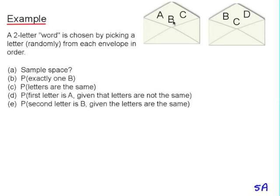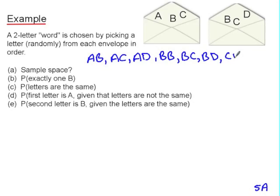In this example, we have two envelopes, each containing three letters. And we make a two letter word by picking a letter randomly from each envelope. So I could take the B and the B, or the A and the B, etc. So my sample space could just be written as a list. AB, AC, AD, BB, BC, BD, CB, CC, CD. And you'll notice I've written this list in a fairly systematic way.